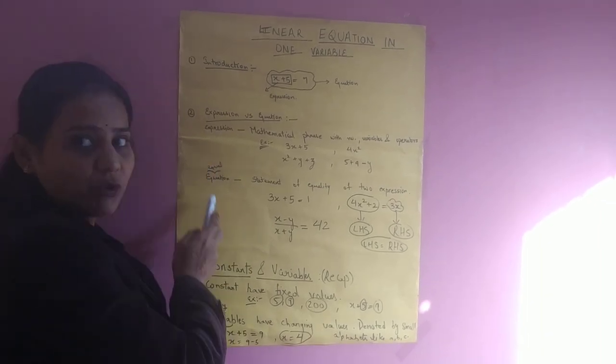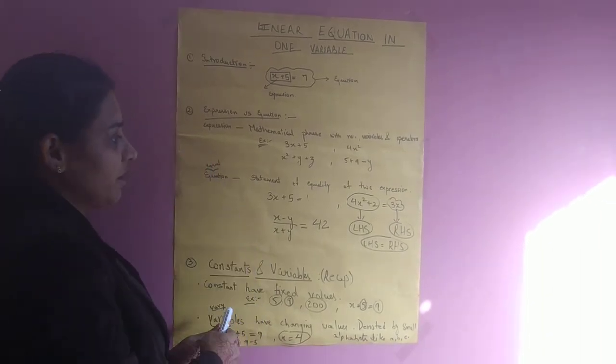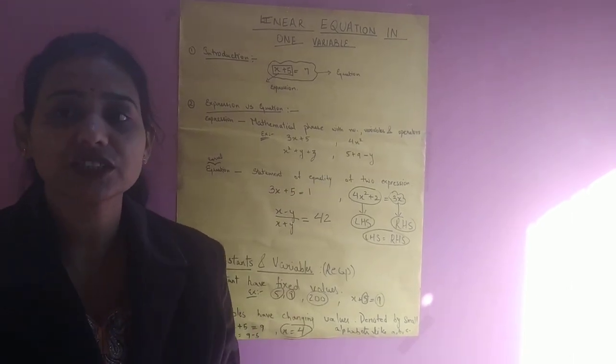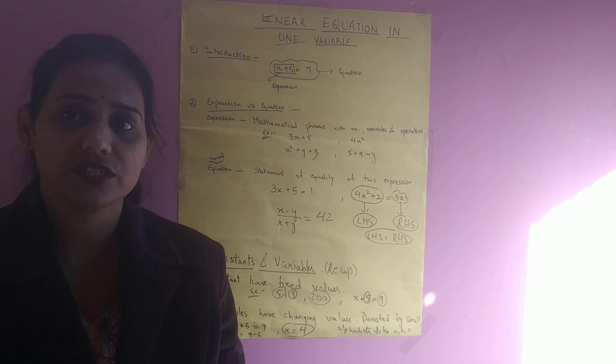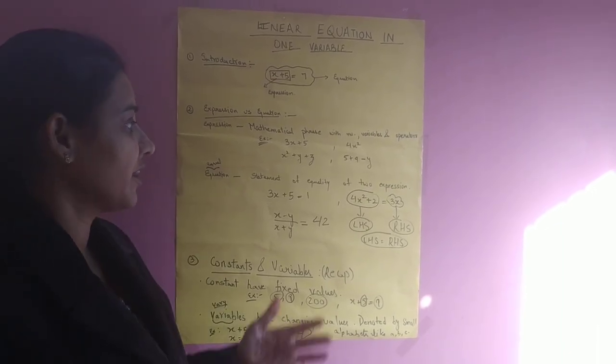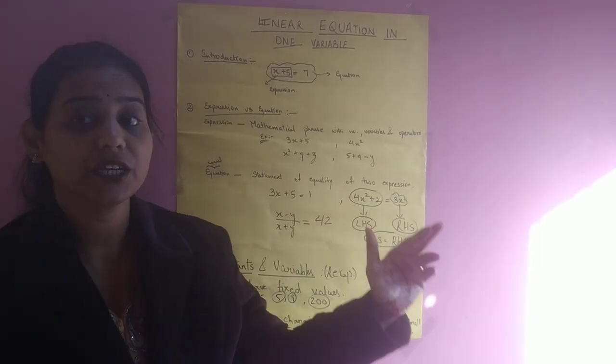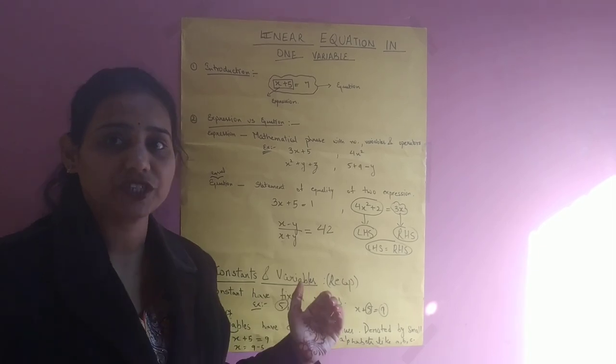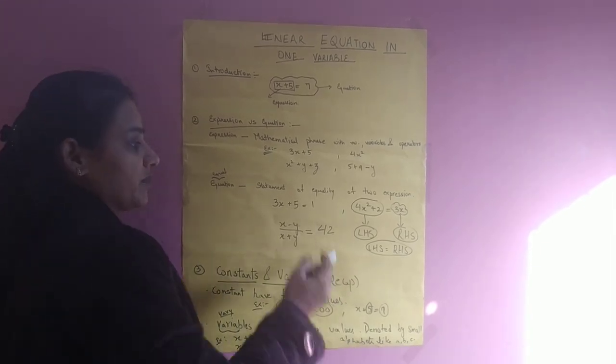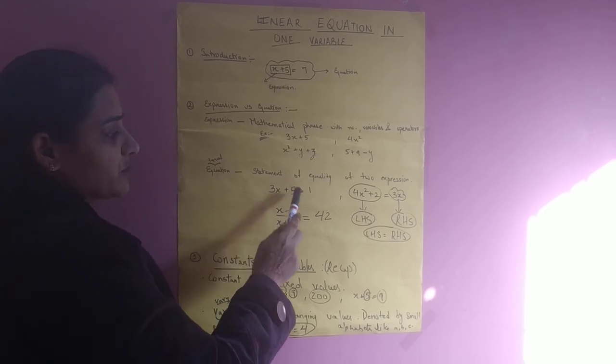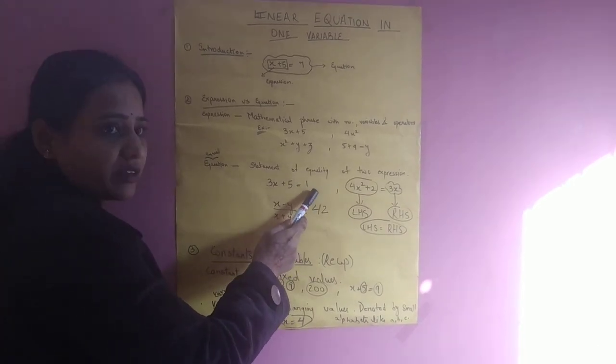So what is an equation? Equation word comes from equal. Statement of equality of two expressions are known as the equations. If we can say it in other words, like if we join two expressions with an equality sign, it is known as the equation.